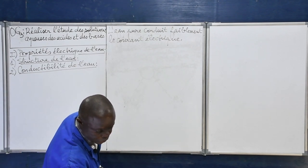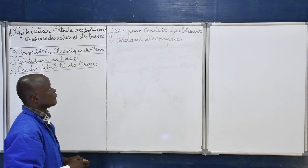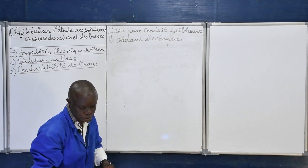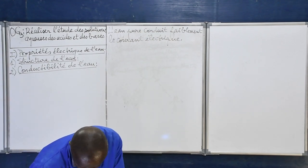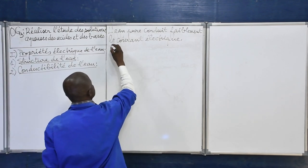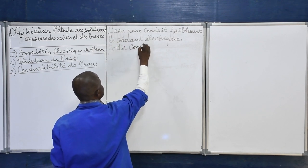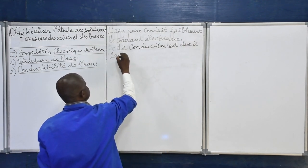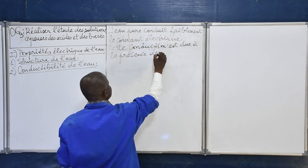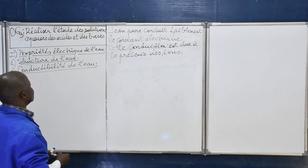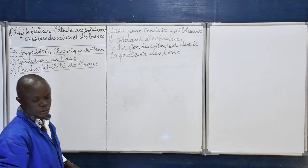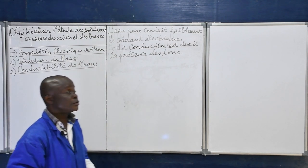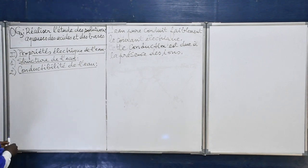L'eau pure conduit faiblement le courant électrique parce qu'il y a des ions dans l'eau pure. Ces ions sont responsables de la conductibilité de l'eau. Petit 3 : autoprotolyse de l'eau.